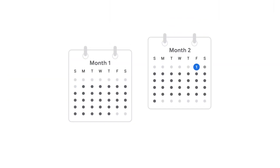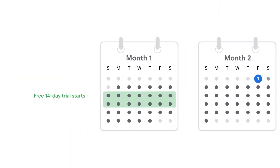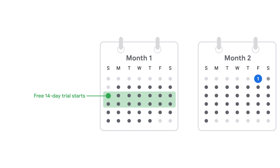A prorated month can occur when your billing starts during the month, such as when your trial ends. For example, if you finished your trial on the 14th of the month, your first bill covers usage from the 15th through the end of that month.